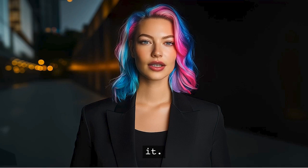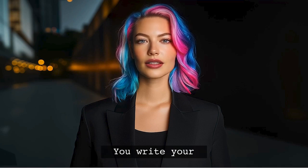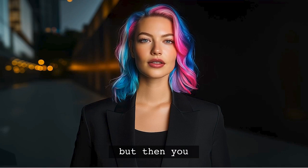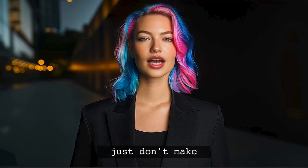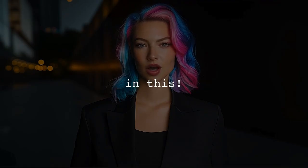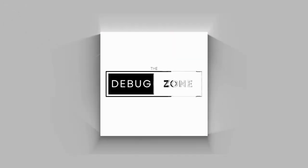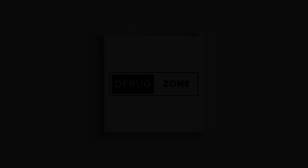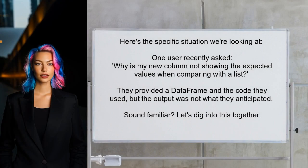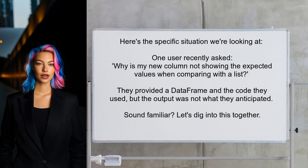I totally get it. You write your code expecting it to work perfectly, but then you see results that just don't make sense. You're not alone in this — many people face similar challenges when working with data frames in Python. Here's the specific situation we're looking at: one user recently asked, why is my new column not showing the expected values when comparing with a list? They provided a data frame and the code they used, but the output was not what they anticipated. Let's dig into this together and find a solution.